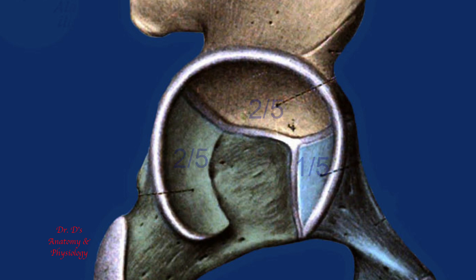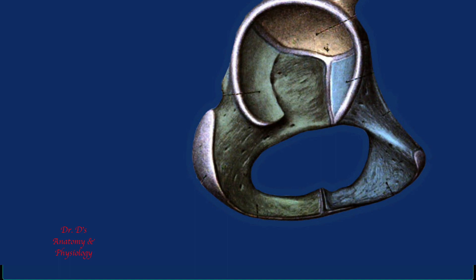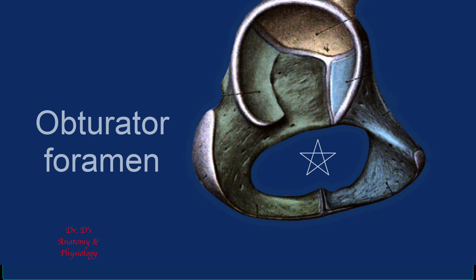An important feature resulting from the way the pubis and ischium fuse is this large foramen, called the obturator foramen. The name is paradoxical because the word in Latin means 'the obstructor,' and the only reason this makes sense is that in the living human this opening would be completely obstructed by soft tissue.